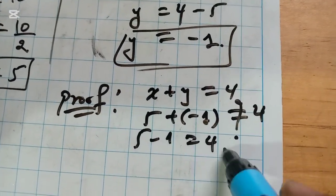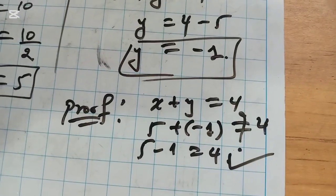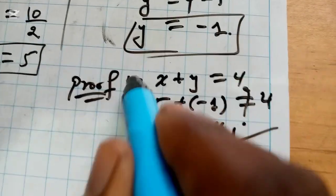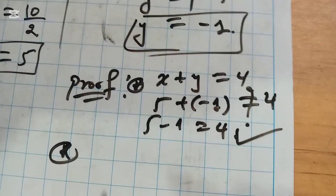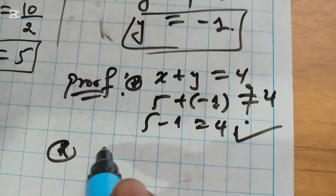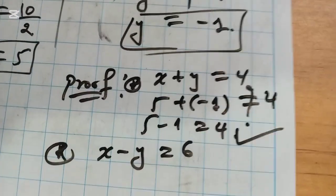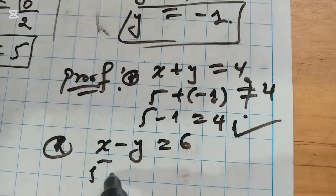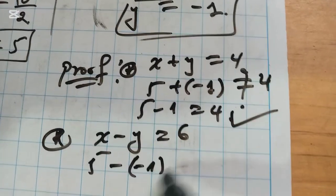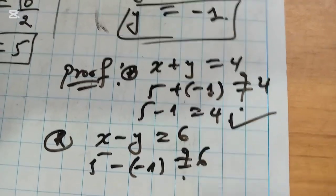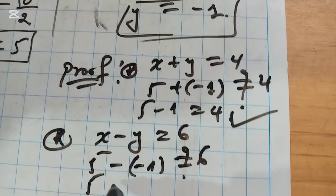On the other side, you have X minus Y equals 6. So 5 minus negative 1 equals 5 plus 1, because minus times minus equals plus.